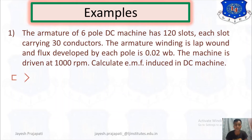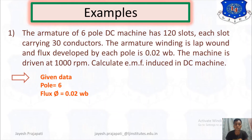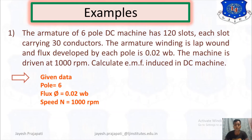Writing down the given data: number of poles P equals 6, flux Φ equals 0.02 Weber, speed NR equals 1000 rpm. The unit of flux is Weber.